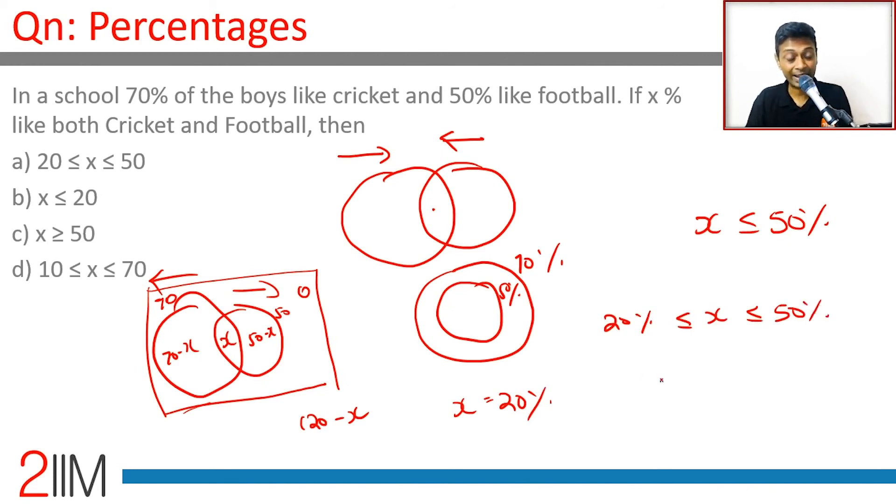So 20% ≤ x ≤ 50%. Imagine the Venn diagram being pushed inwards and outwards—very simple way of thinking about it. Makes the question very straightforward.